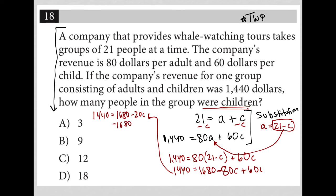I can subtract 1,680 from both sides. 1,440 minus 1,680 is negative 240, so I have negative 240 equals negative 20C. Divide both sides by negative 20, and I'm left with positive 12 for the number of children. Therefore, my answer is choice C.